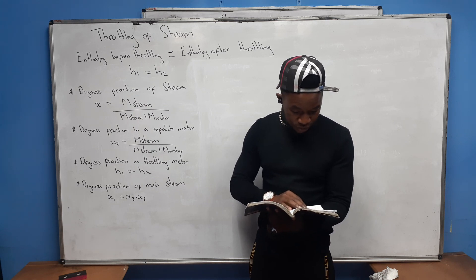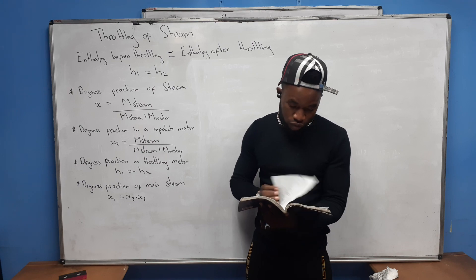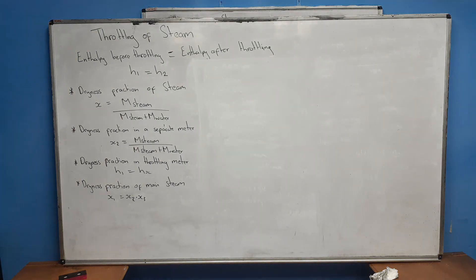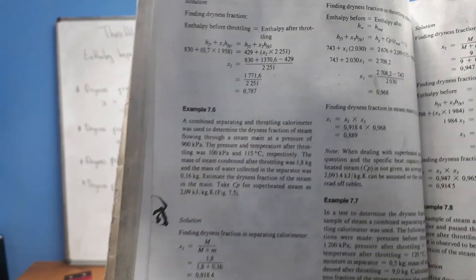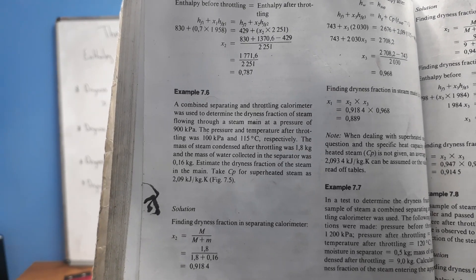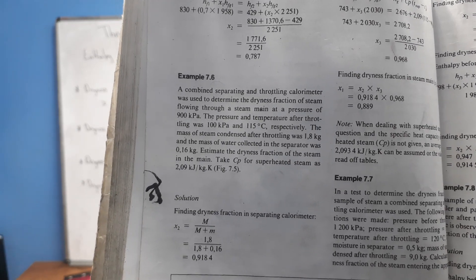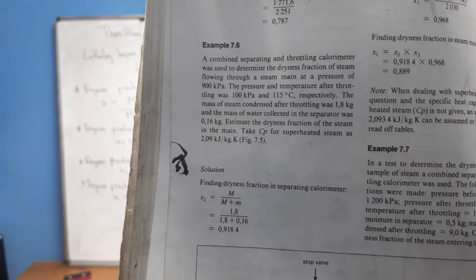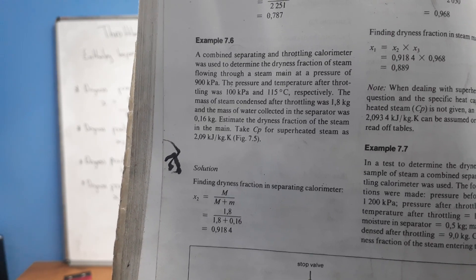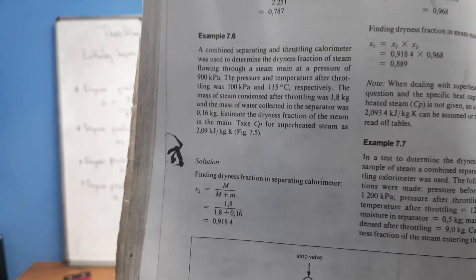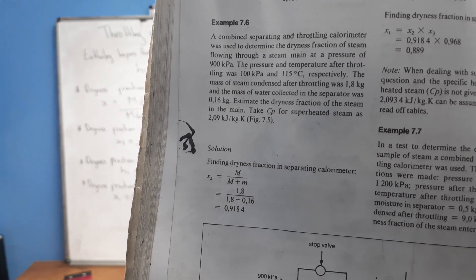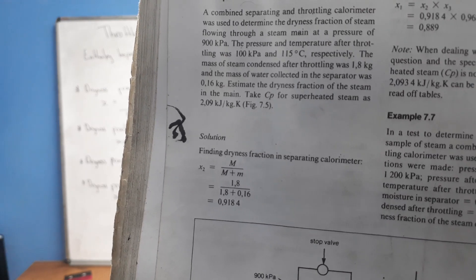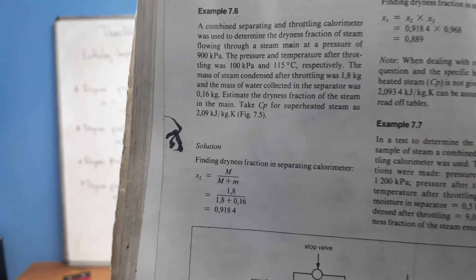I'm going to do Example 7.6. It reads: a combined separating-throttling calorimeter was used to determine the dryness fraction of steam flowing through a steam main at a pressure of 900 kPa. The pressure and temperature after throttling are 100 kPa and 115°C respectively. The mass of steam condensed after throttling is 1.8 kg and the mass of water collected in the separator was 0.16 kg. Estimate the dryness fraction of the steam in the main. Take cp for superheated steam as 2.09 kJ/kg·K.